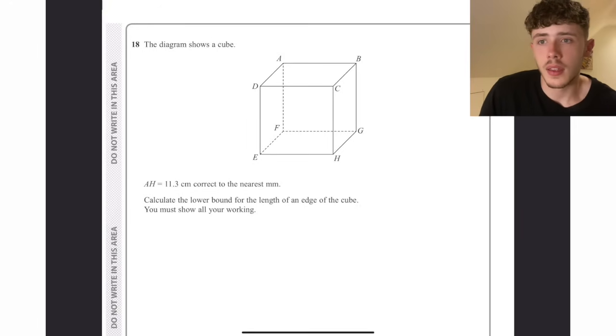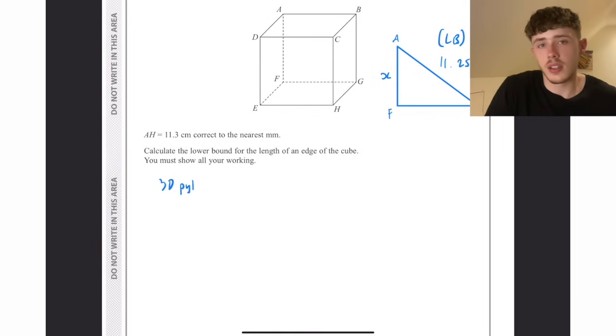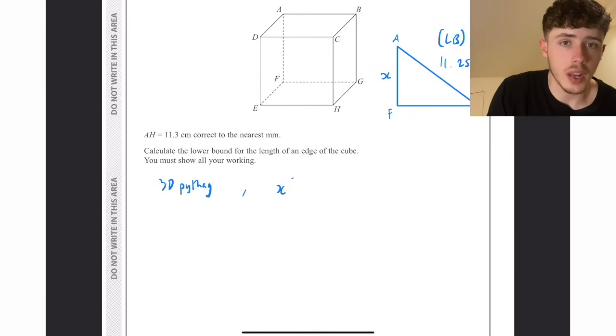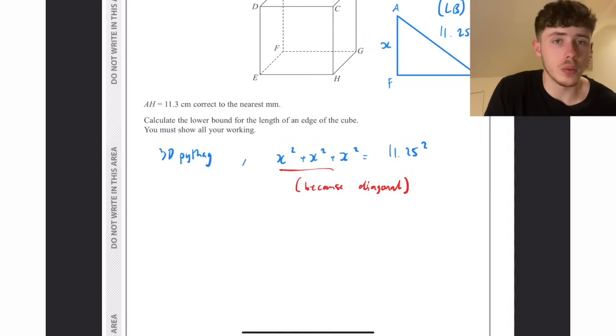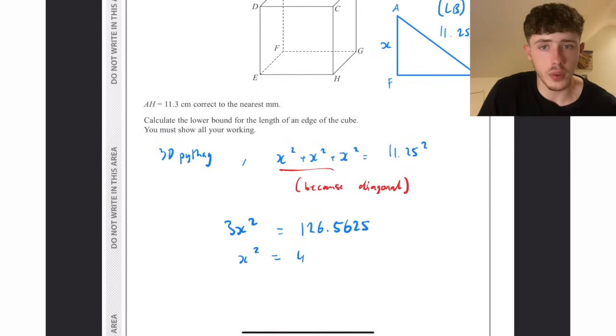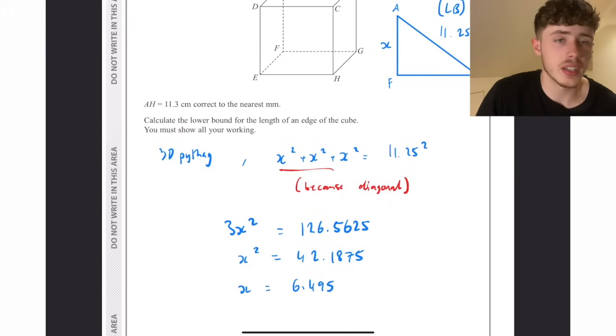Question number 18. AH equals 11.3 correct to the nearest millimetre. Because that is to the nearest millimetre, and we want to calculate the lower bound, the lower bound of AH would be 11.25, so that's what we put there. Now when you're doing 3D Pythagoras, there's a slightly different equation. You actually do A squared plus B squared plus C squared equals D squared, because the diagonal, when you do AF and FH, they're not going to be exactly the same because FH is on the diagonal. So we do X squared plus X squared plus X squared, because it's a cube they're all identical. So we set that up as an equation. We have 3X squared equals 11.25 squared, which is 126.5625. Divide it by 3 and then square root it, and our final answer is 6.495.